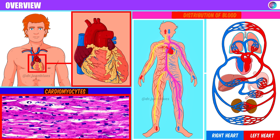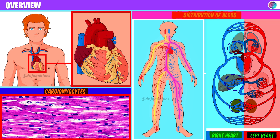The heart can be classically divided into two halves: the right half or right heart, and the left half or left heart. The right heart receives the poorly oxygenated blood which returns from the different organs or tissues and sends it to the lungs for the respective gas exchange. The left heart is in charge of receiving the oxygenated blood coming from the lungs, and distributing this oxygen-rich blood to the different organs and tissues.